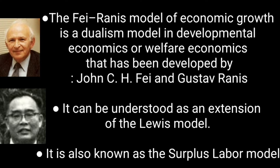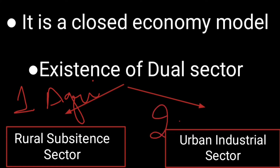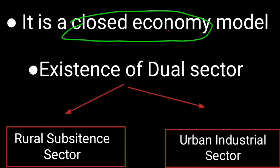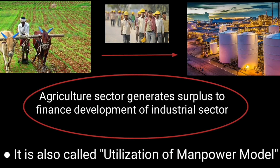It can be understood as an extension of the Lewis model, and it is also known as the surplus labour model. There is existence of a dual sector, which means there is one sector which is the rural subsistence sector or the agriculture sector, and the other one is the urban industrial sector. This is a closed economy model, which means there is no trading activity taking place — no export, no import with the rest of the world. Basically, the model talks about how the agriculture sector generates surplus to finance the development of the industrial sector.